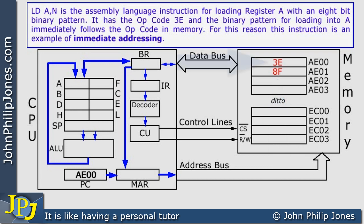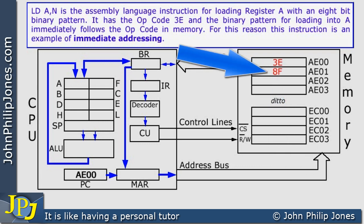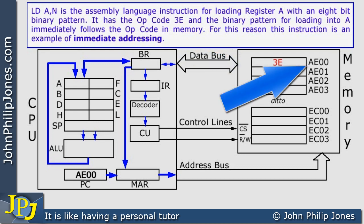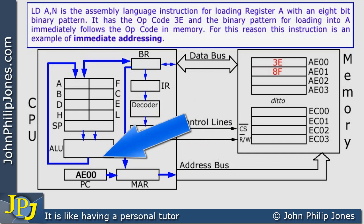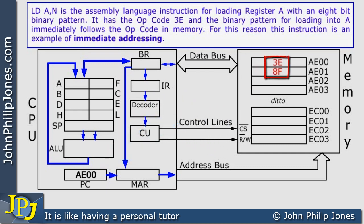These patterns are both the opcode and the operand. For this program to actually start, we have to ensure that address AE00 is in the program counter, and you can see that it is. So this particular machine code instruction spans two memory locations: the 3E in the first memory location, and the 8F immediately following the opcode in the next memory location.